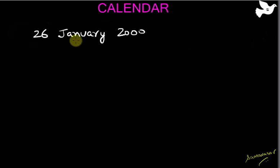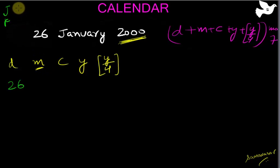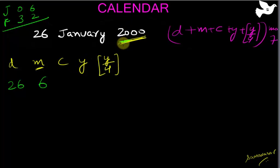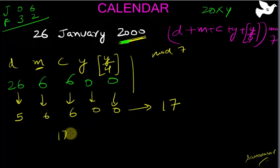Now 26 January 2000. The year 2000 is a leap year, so first check whether it is a leap year since the month code changes. D is 26. January in a leap year has code 6. C: it is the 21st century, so code is 6. Y is 0; y divided by 4 gives quotient 0. Sum: 26 mod 7 is 5, plus 6 plus 6 plus 0 plus 0 equals 17. Then 17 mod 7 gives remainder 3, and 3 means Wednesday.